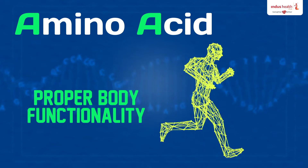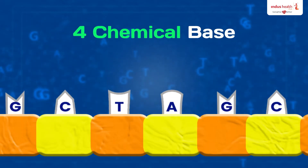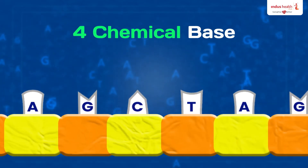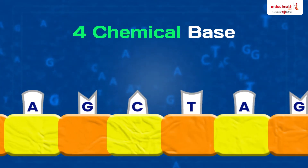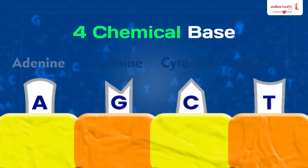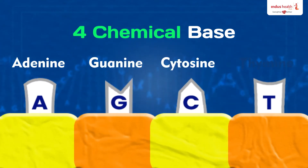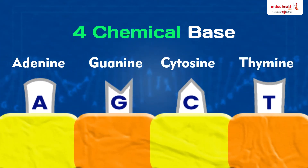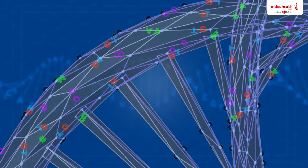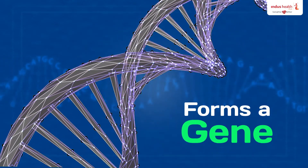So how does it work? The information in DNA is stored as a code made up of four chemical bases: adenine, guanine, cytosine, and thymine. A combination of these letters forms a gene.